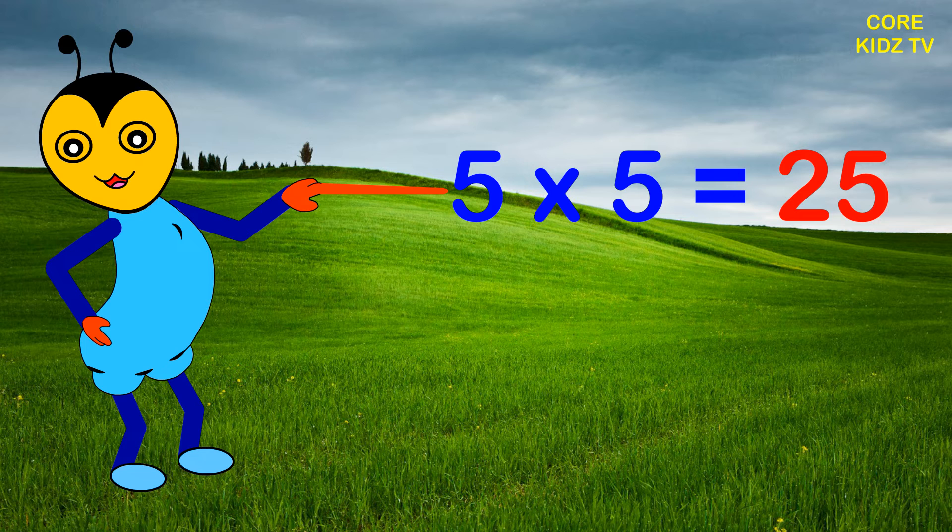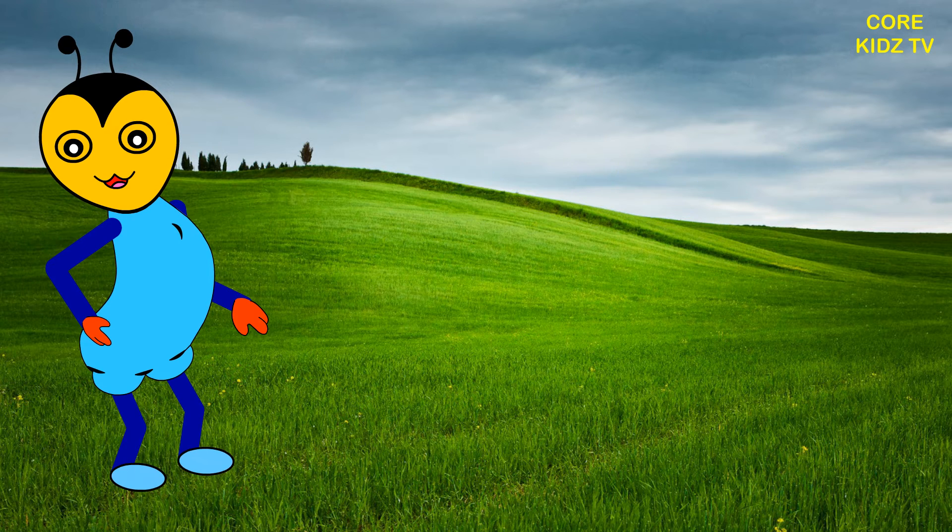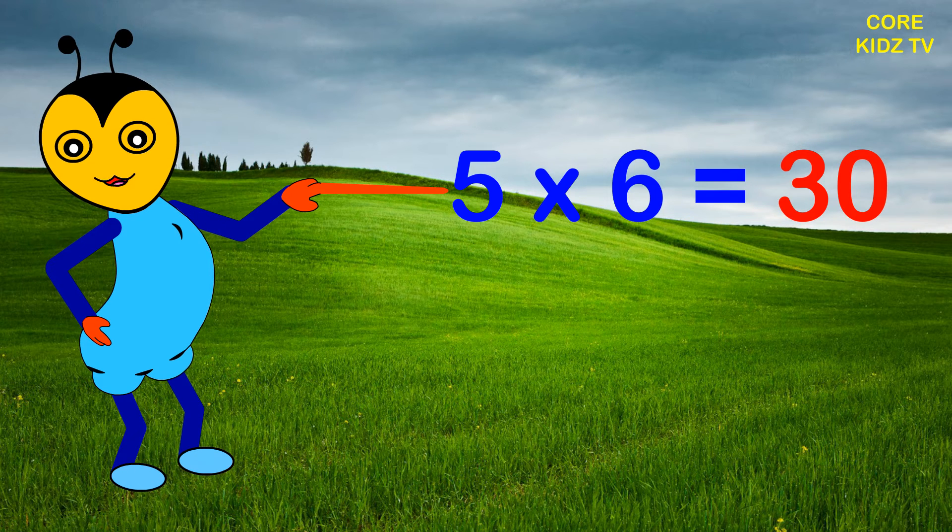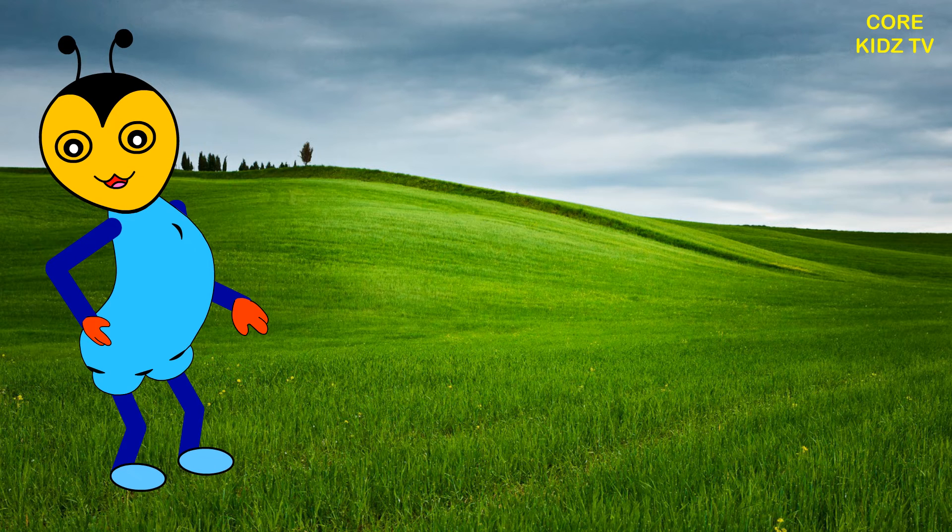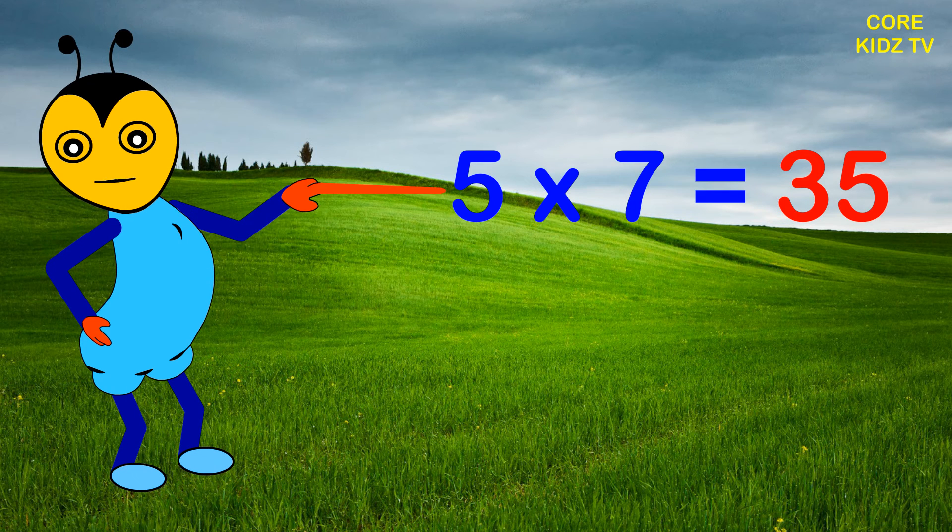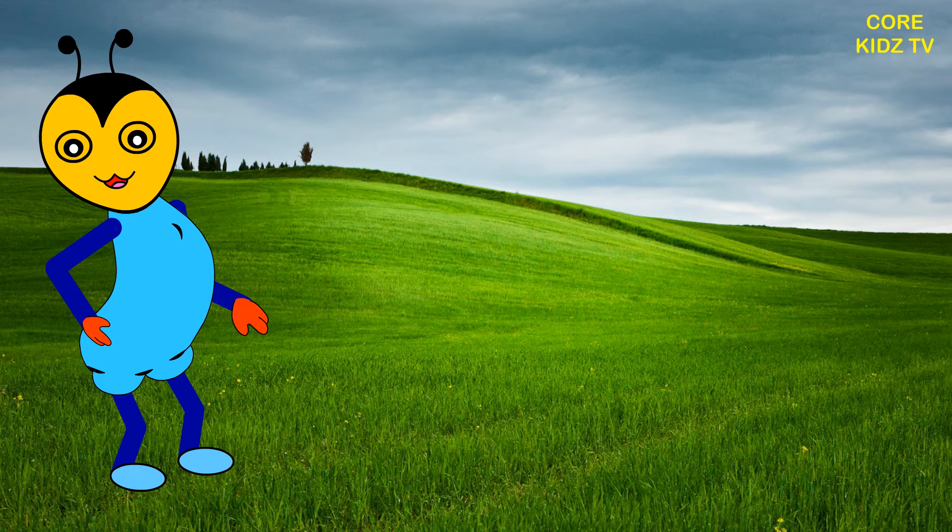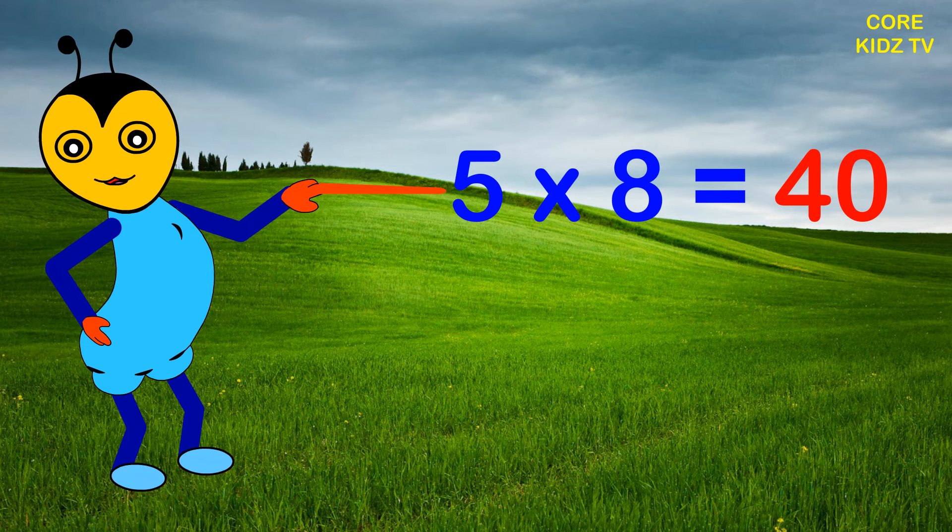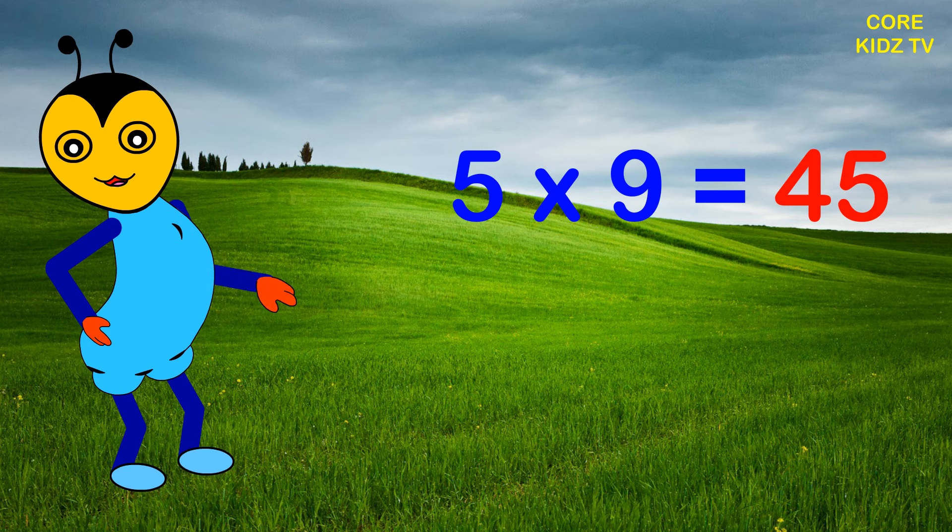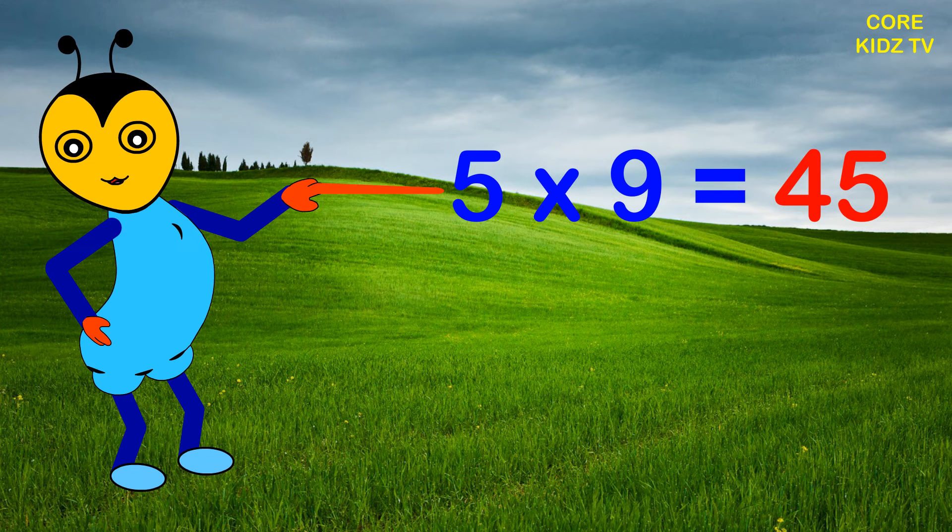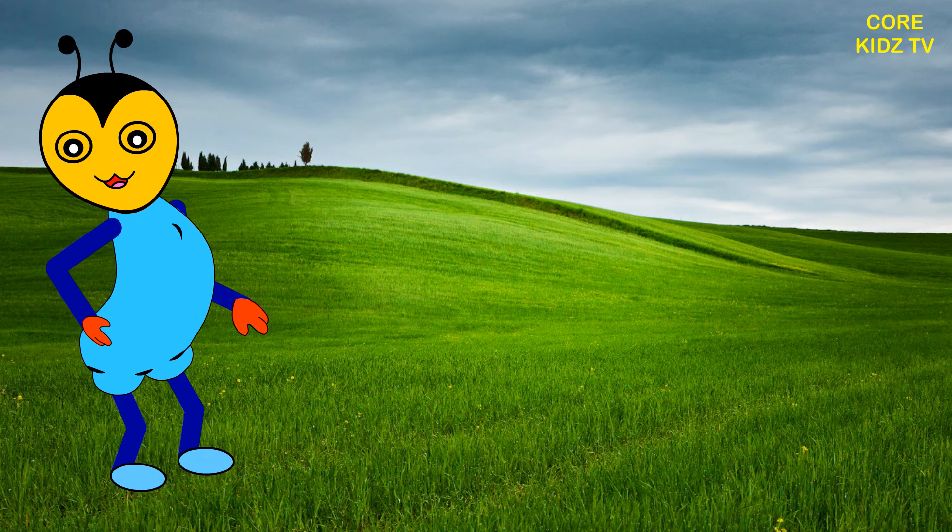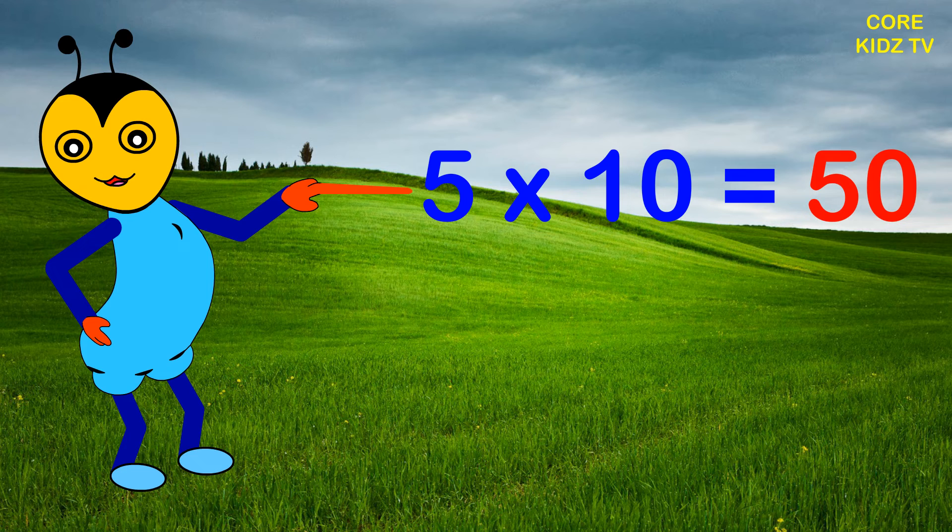Five fives are twenty-five, five six are thirty, five sevens are thirty-five, five eights are forty, five nines are forty-five, five tens are fifty.